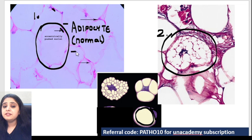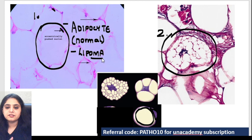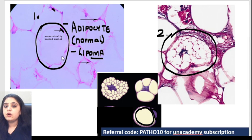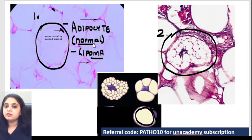For that matter, even if a benign tumour arises — that is a lipoma — lipoma has the word 'oma', it is a benign tumour of fat. Even a benign tumour of the fat will have lots of these cells only. These are normal looking fat cells, we call them adipocytes. So even normal fat looks like this, and even a benign tumour looks like this.